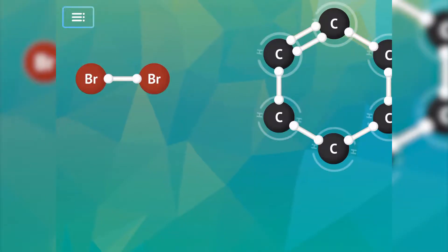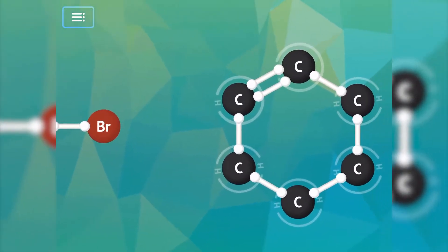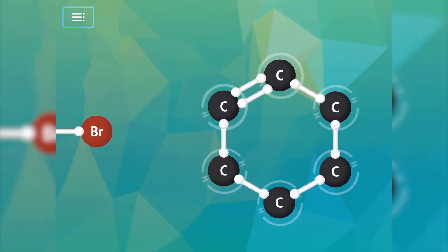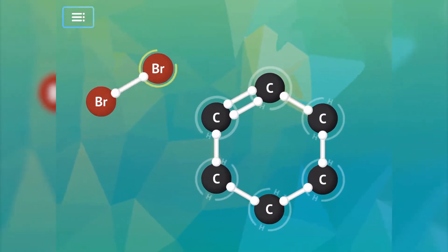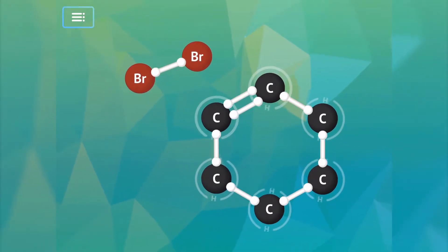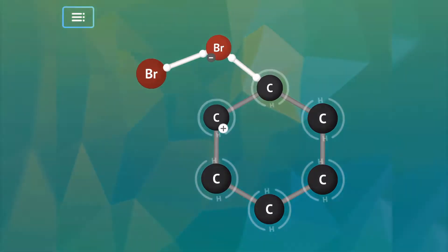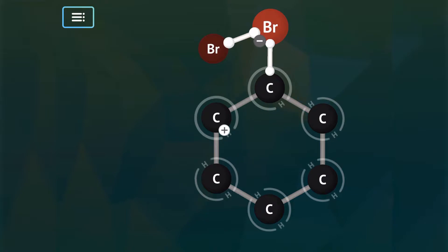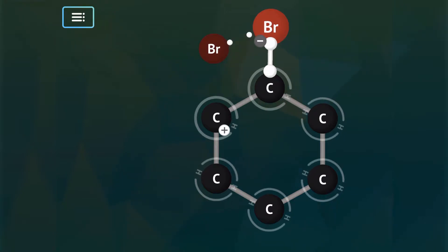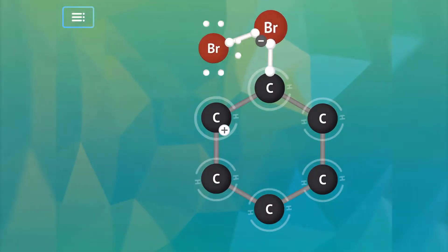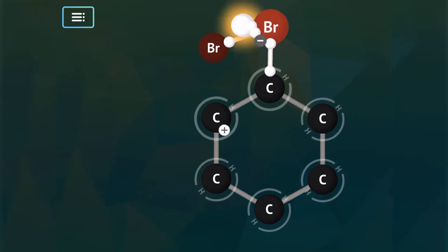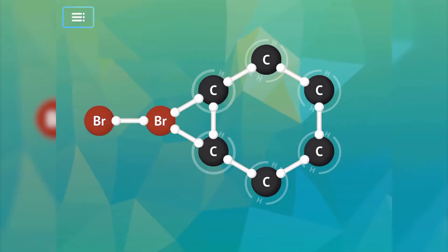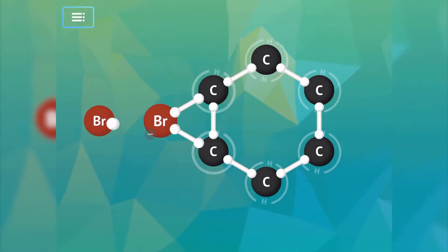The bromine molecule attracts the electrons in the pi bond, but instead of one bromine adding to one side and not the other, it's big enough to combine to both sides of the double bond, resulting in a three-membered ring with a positive formal charge on bromine — a bromonium ion.